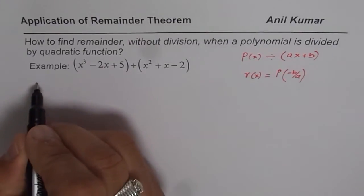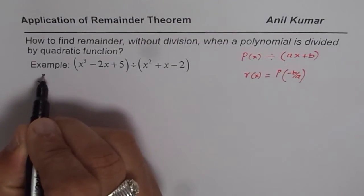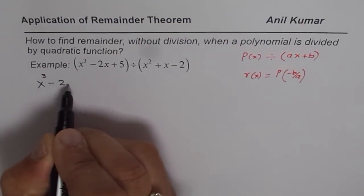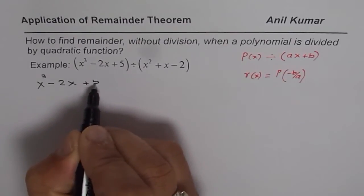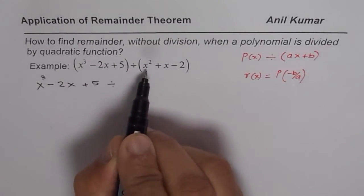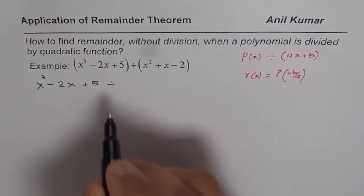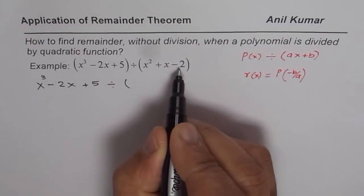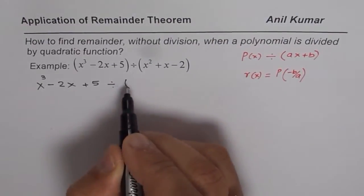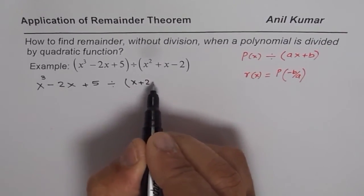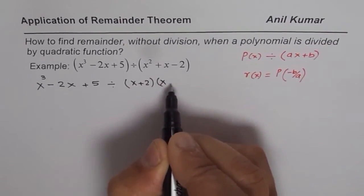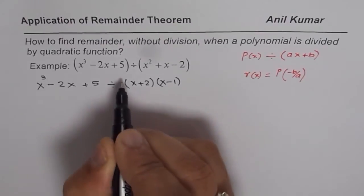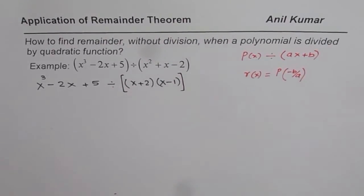Let's rewrite this question as X³ minus 2X plus 5 divided by—now we can factor X² plus X minus 2 as product of minus 2, sum of plus 1—that means (X + 2) times (X - 1).